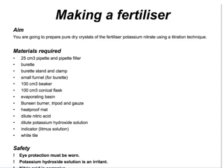Now on to the experimental details of making a fertiliser. You'd need a lot of equipment, but essentially we'd need to use an acid and an alkali. In this case, trying to make potassium nitrate, we would use potassium hydroxide and nitric acid. It's a good fertiliser because it contains two essential elements: potassium and nitrogen.